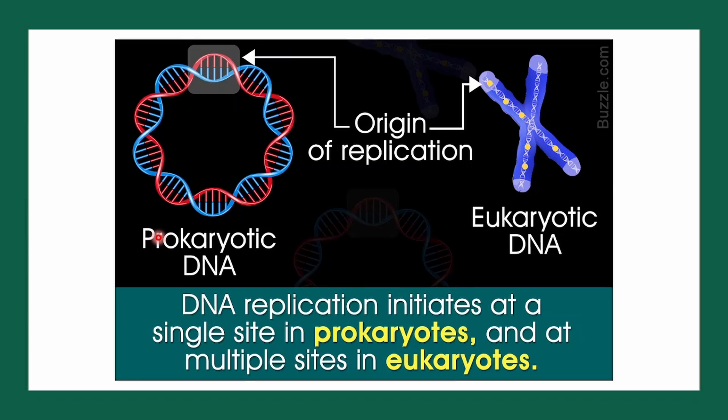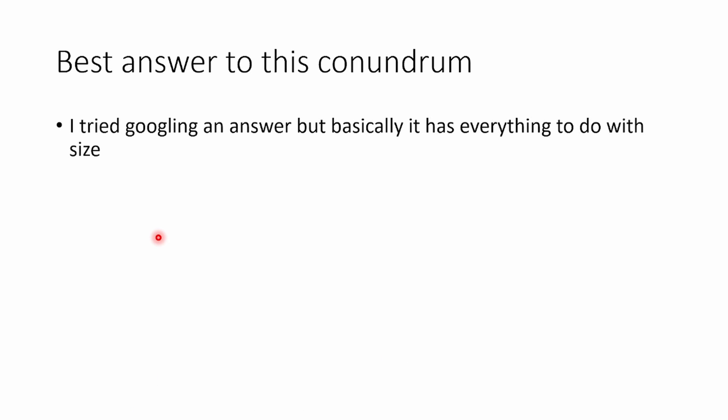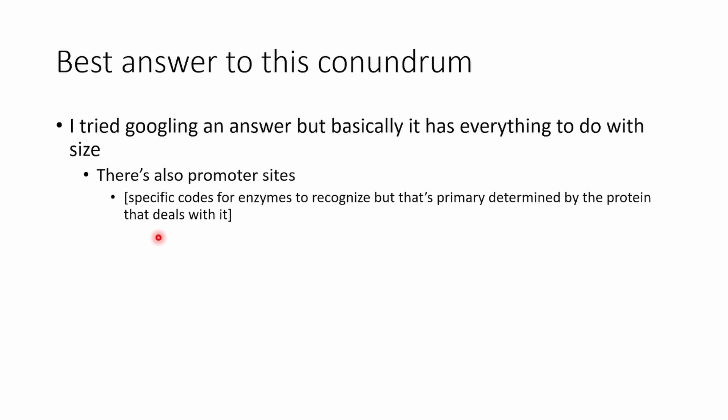Now to get more into the nitty-gritty about DNA replication — there's only a single site that initiates in prokaryotes, and multiple sites in eukaryotes. I don't fully understand the actual reason why this happens in eukaryotes, but my best answer is it has everything to do with size. There are also promoter sites, but no one really knows where the promoter site is or what it does exactly.